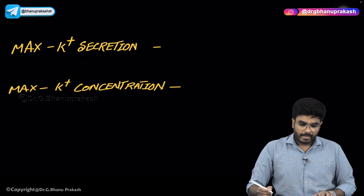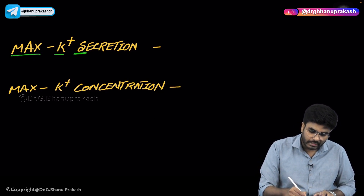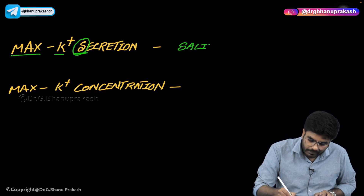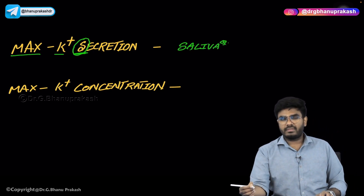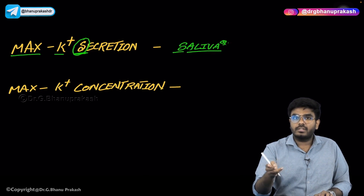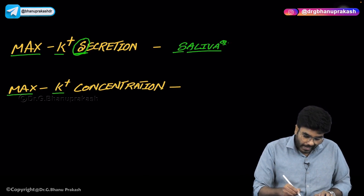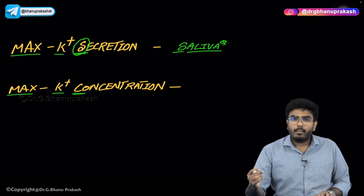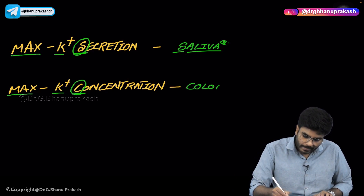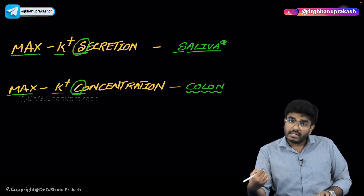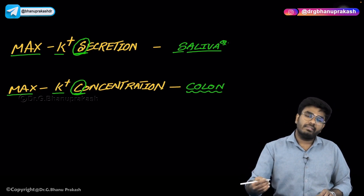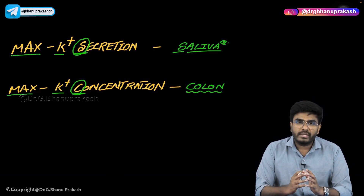A few more important points about saliva for MCQ exams: The maximum potassium secretion happens into saliva. However, if the question asks which body secretion has the maximum concentration of potassium, the answer is colonic secretions. So — maximum secretion of potassium is into salivary secretions, but maximum concentration of potassium is in colonic secretions.